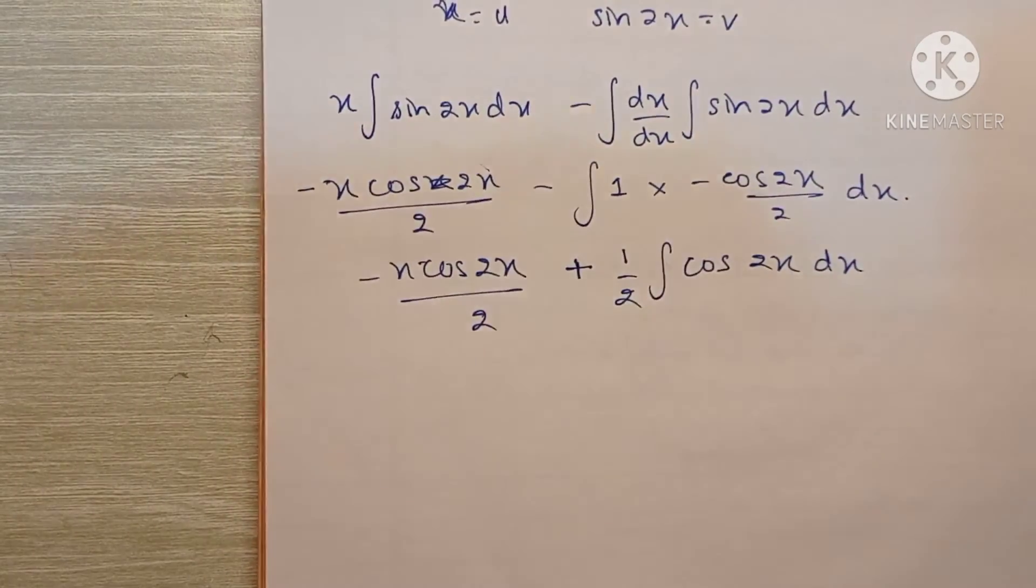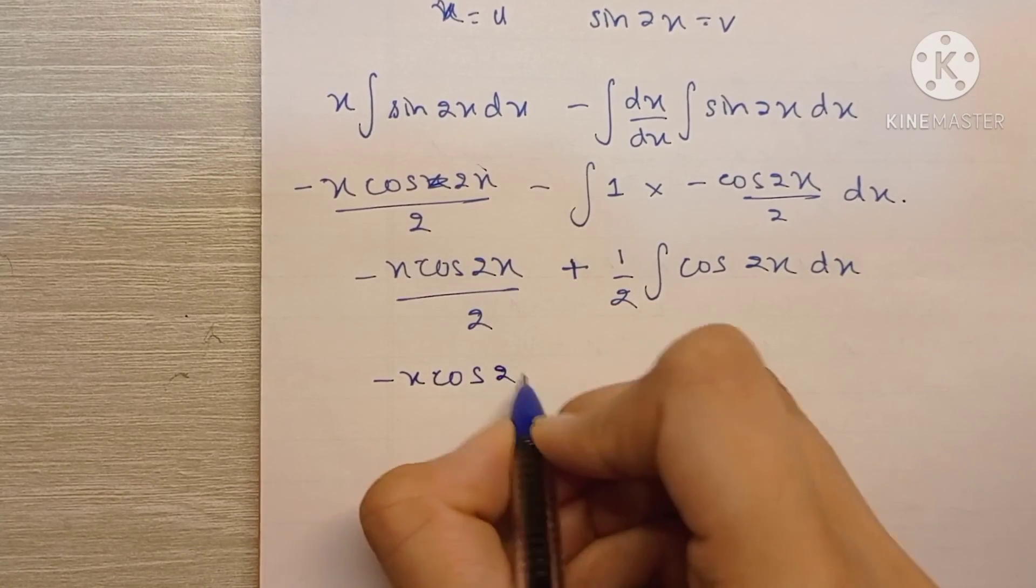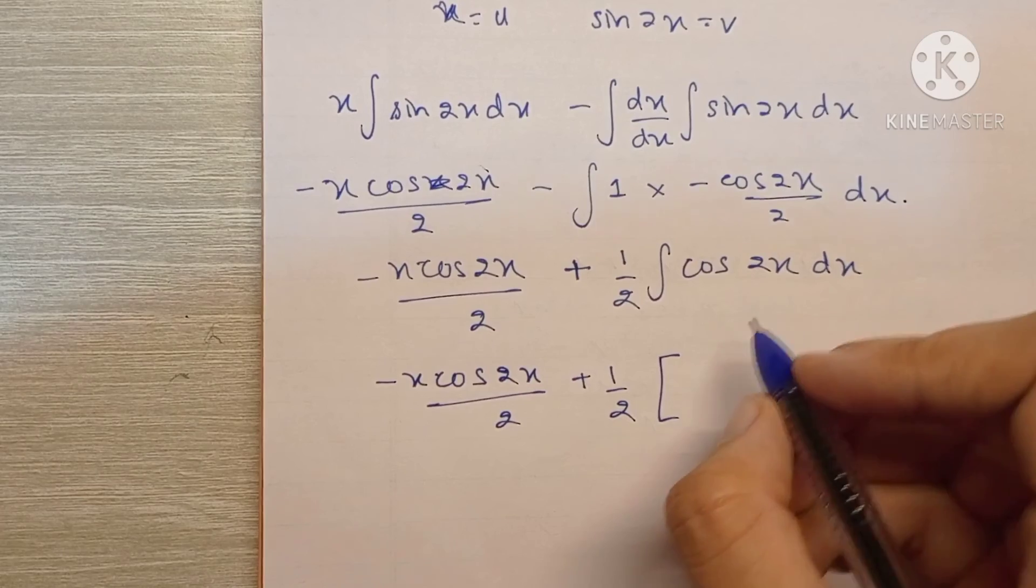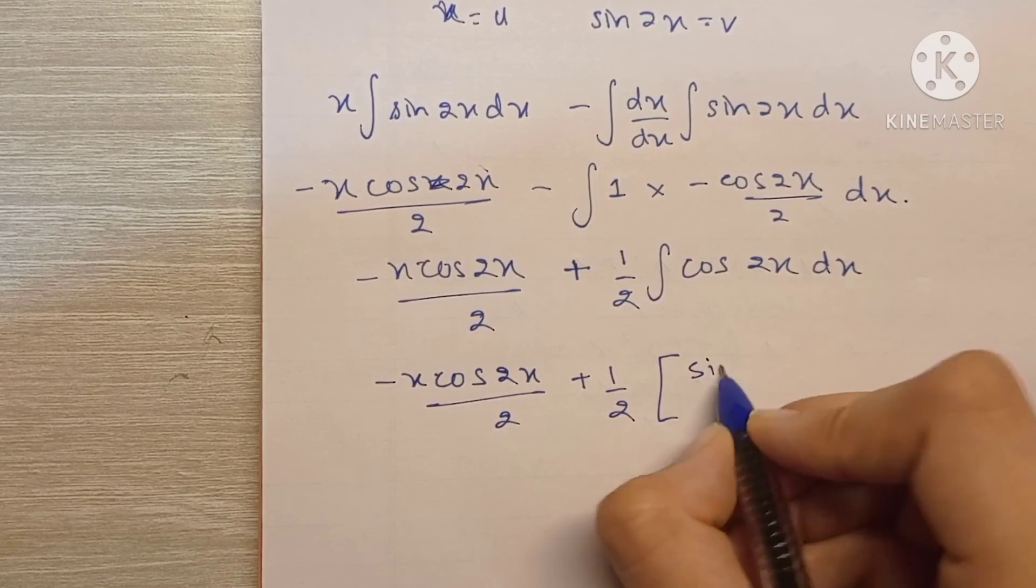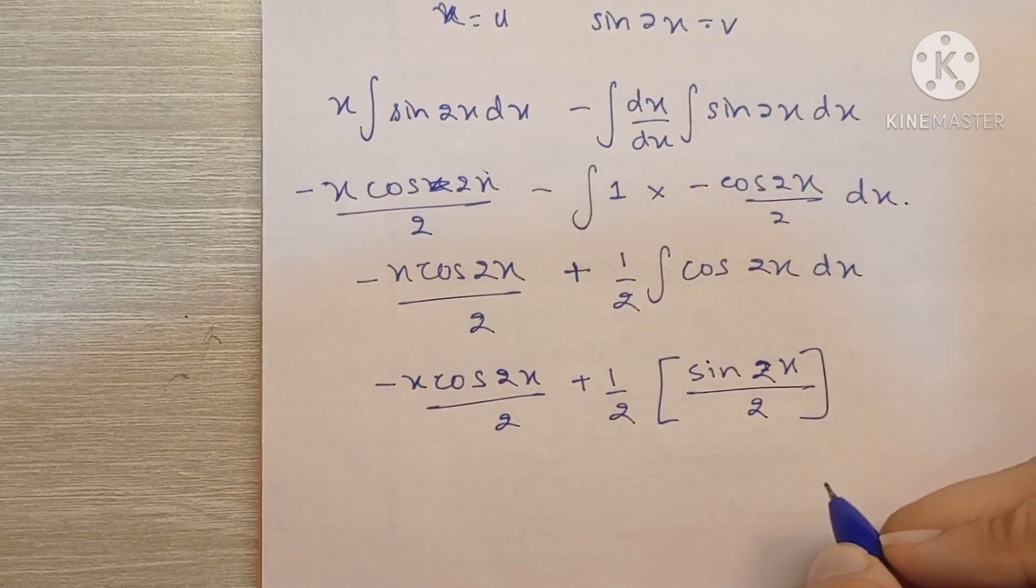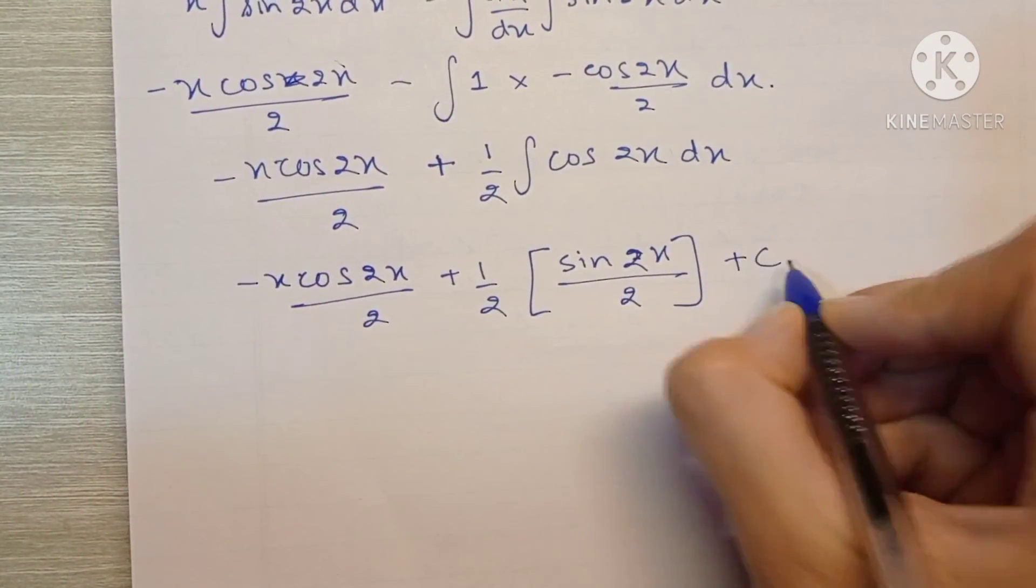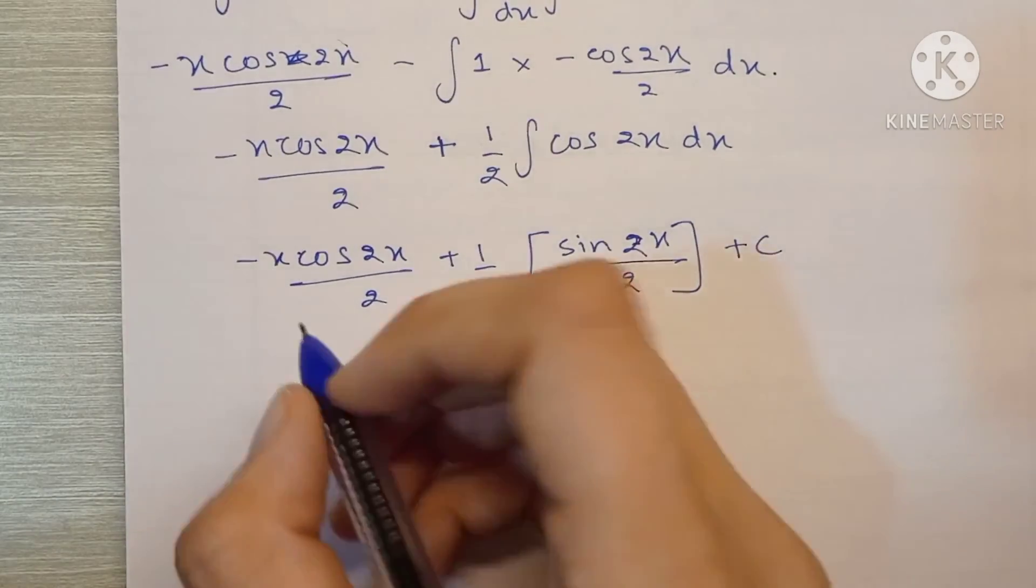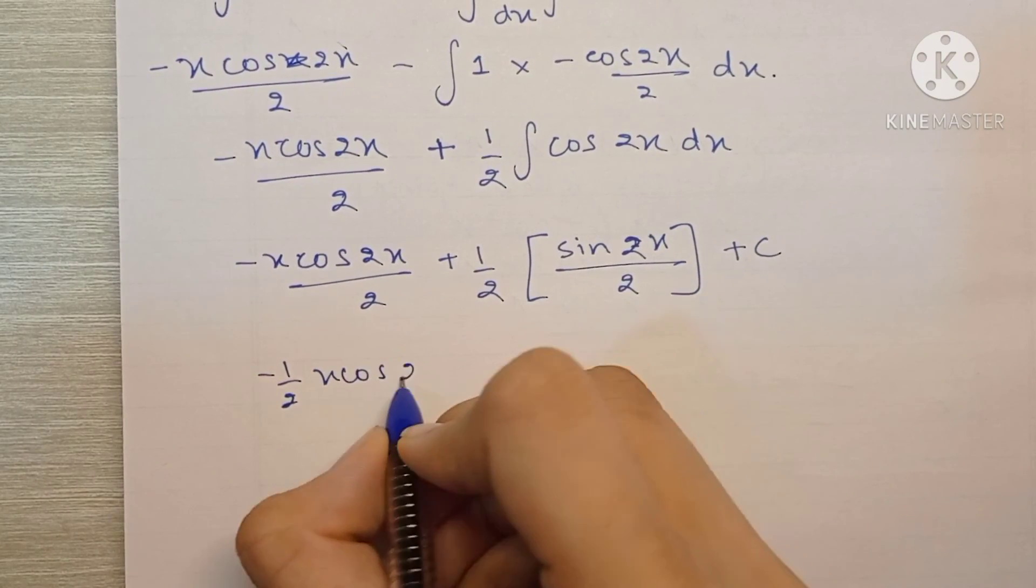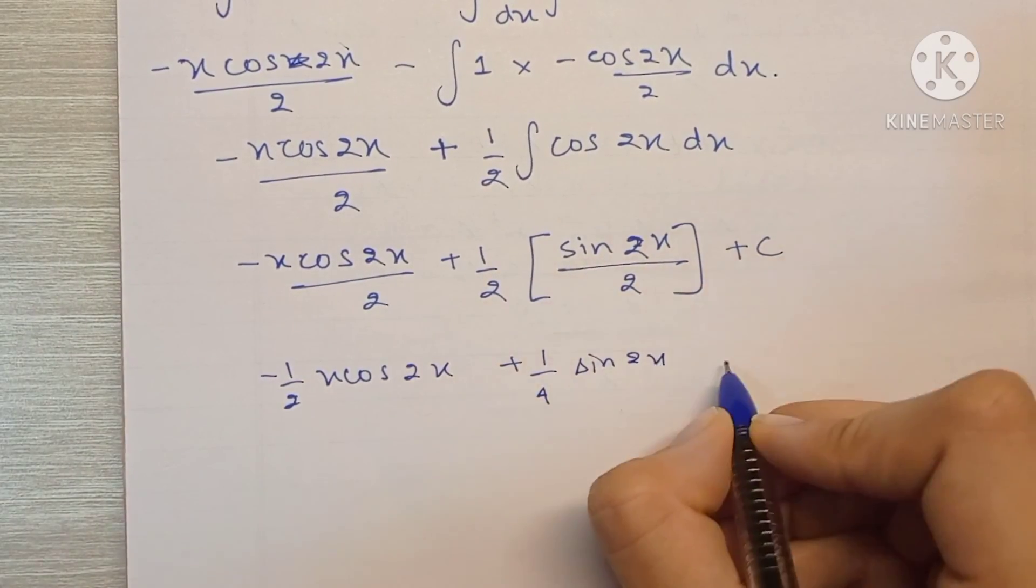We know that the integration of cos is sin. So minus x cos 2x by 2 plus 1 by 2 into cos 2x becomes sin 2x upon 2. So the final answer, don't forget plus c, that's something that we tend to forget. Final answer becomes minus 1 by 2 x cos 2x plus 1 by 4 sin 2x plus c.